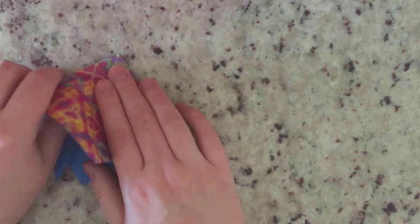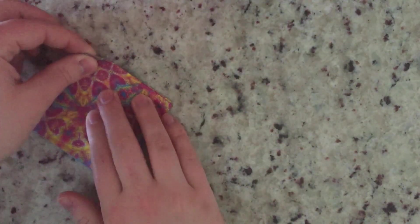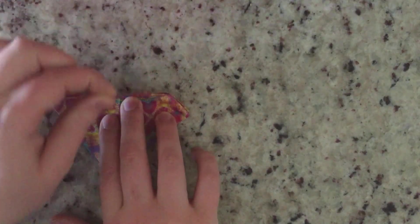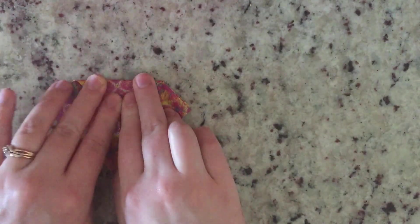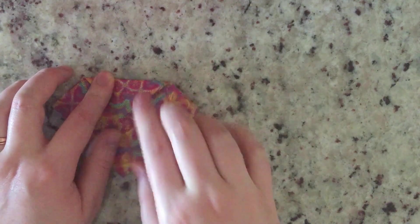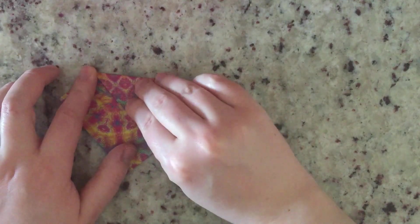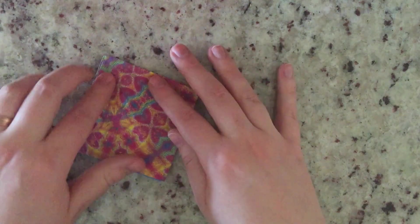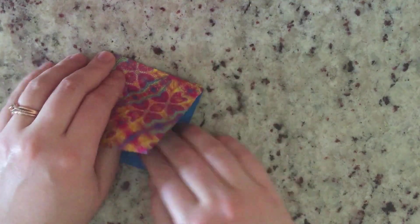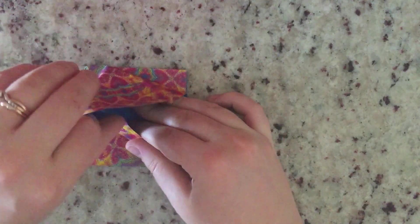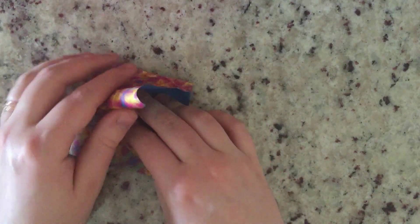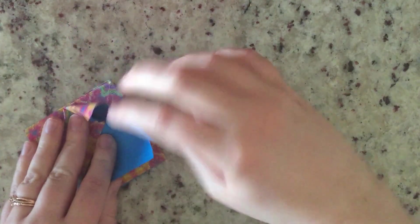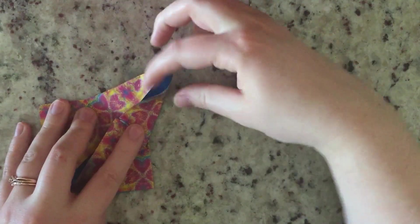One thing I'm going to do to help myself out here is actually take this corner and fold it down so it matches up with this fold line here that you can't really see. And that'll make it a little bit easier. There we go.